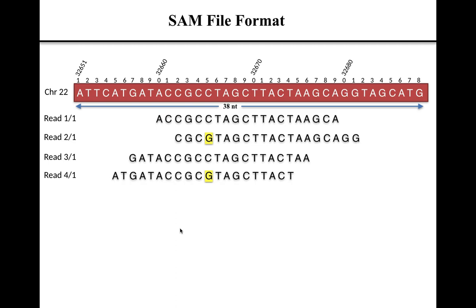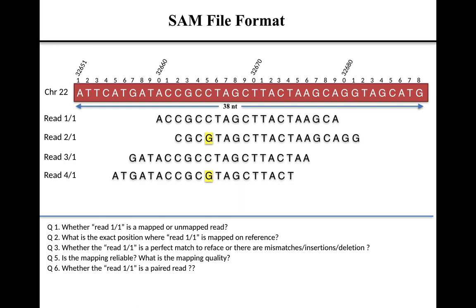By examining this graphical format, we can answer several questions about the reads aligned to the reference sequence. For example, whether Read 1 is a mapped or unmapped read. As we can see, Read 1 has a fairly good match with the reference, so we can say it is a mapped read. If you want to know the exact position where Read 1 is mapped, we look for where the first base of Read 1 aligns — in this example, position 32,660 on the reference sequence.